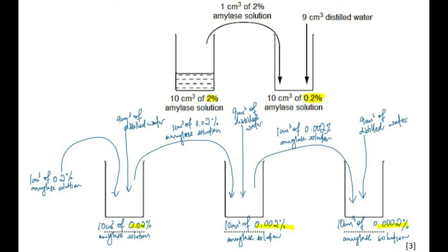Usually, they will draw the beakers for you, and you would need to draw the arrows and show the volumes of solution transferred. Again, it's a 1 to 9 ratio, 9 cm³ of distilled water in each beaker, and then 1 cm³ of amylase solution from the previous concentration. With the calculations done, we are now ready to do our serial dilutions in real life.